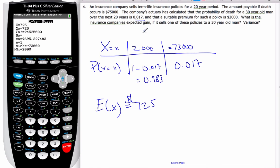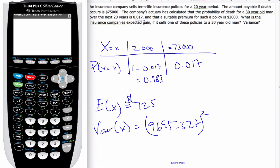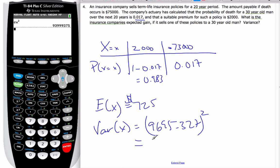So for each person the company sells to they expect to make $725. The variance of X is simply going to be this value here 9695.327, this value squared. So if I want to find that exact value I go variables statistics number four squared and that will give me this great big giant value here and so 93,999,375 is the variance.